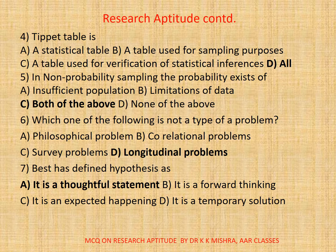Question 5. In non-probability sampling, the probability exists of: a. Insufficient population. b. Limitations of data. c. Both of the above. d. None. The correct option is c. Both of the above.